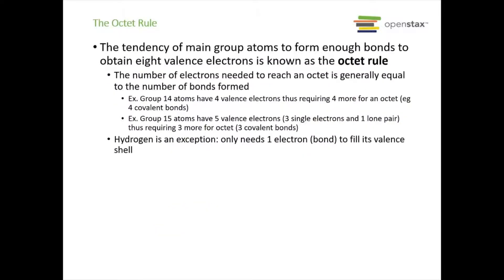The number eight comes up a lot, and this is called the octet rule — the tendency of main group atoms to form enough bonds to obtain eight valence electrons. The number of electrons needed to reach an octet is generally equal to the number of bonds the atom needs to form. For example, group 14 atoms have four valence electrons and need four more, meaning four covalent bonds. Group 15 atoms have five valence electrons with three single electrons and one lone pair, requiring three covalent bonds. Hydrogen is an exception and only needs one bond to fill its valence shell.